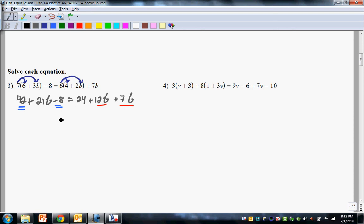Once you do that, you solve for the variable. So that's 42 minus 8, it's going to be 36 plus 21b equals, that's going to be 24 and that's 12 plus 19, excuse me, 12 plus 7 is 19b. You can take it from there.